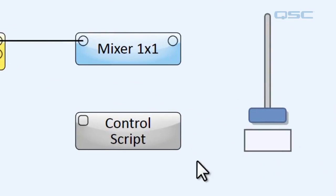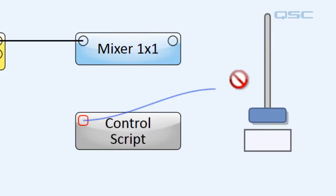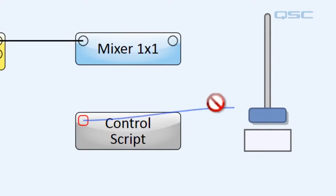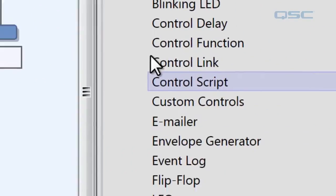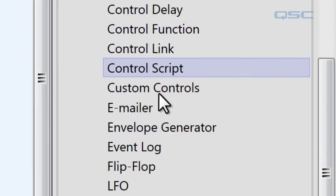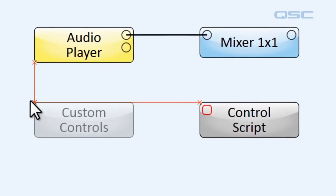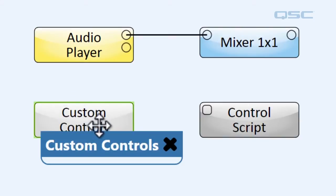Our first step is to connect this Control Script to our fader. But our fader here isn't a component, so it doesn't have any pins that we can wire things to. We're going to need to replace this fader with a custom control. We can get one in our schematic library under Control Components. Drag a Custom Controls component and drop that into our schematic — all this component does is create blank controls in its Control Panel.